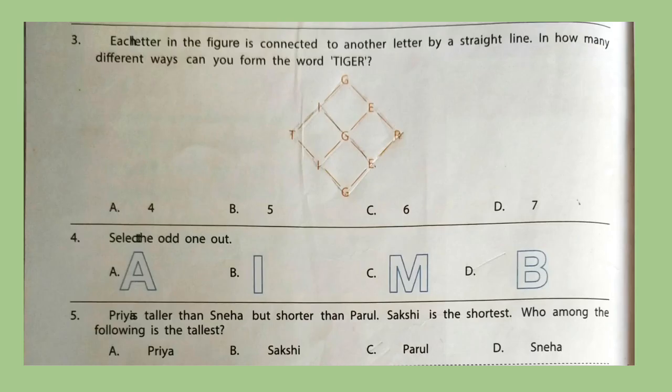Question 3: Each letter in the figure is connected to another letter by a straight line. In how many different ways can you form the word 'tiger'? You can pause the video and try to find out your answer. Correct answer is option C — six times. Question 4: Select the odd one out. Look at the alphabets. Which one is the odd one out? Option D. A, I and M don't have any curved lines.